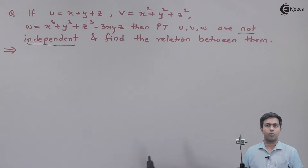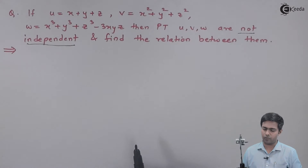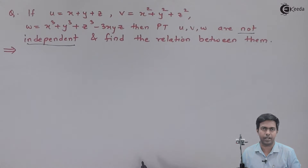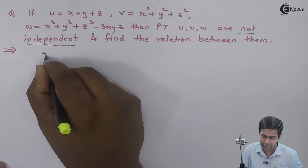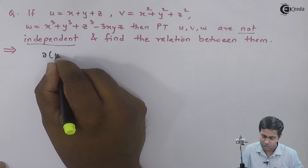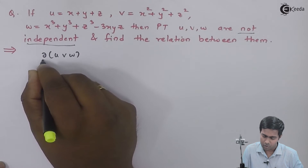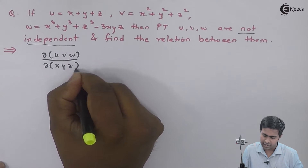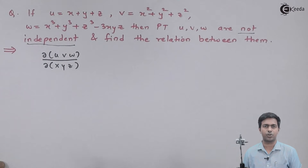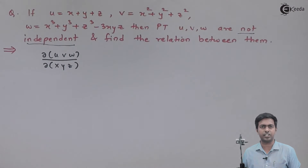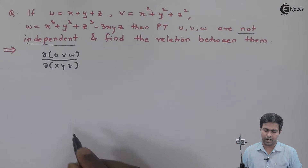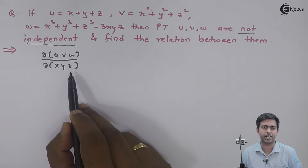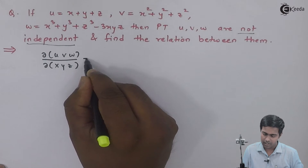Let's start. If we want to find that u, v, w are functionally dependent, then we have to prove one condition: that the Jacobian ∂(u,v,w)/∂(x,y,z) is equal to zero. To prove that condition, I will find the Jacobian of u, v, w with respect to x, y, z.